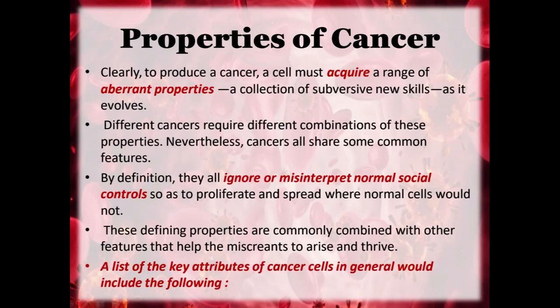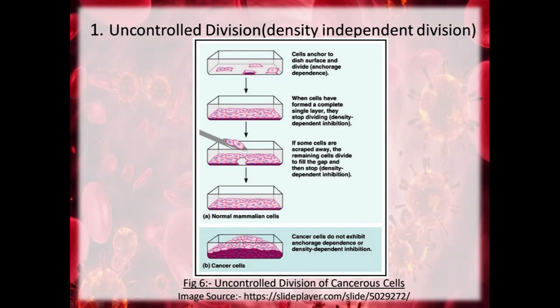Now, the properties of cancer. To produce a cancer, a cell must acquire a range of properties — a collection of subversive new skills as it evolves. Different cancers require different combinations of these properties. Nevertheless, cancers all share some common features. By definition they all ignore or misinterpret normal social controls so as to proliferate and spread where normal cells would not. There are a few key attributes of cancer cells: the first one is uncontrolled division, which is based on density independent division.